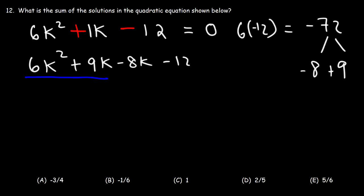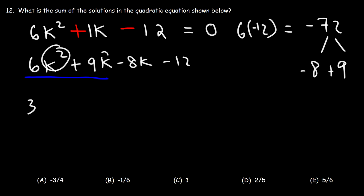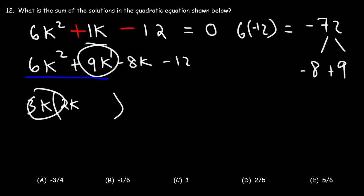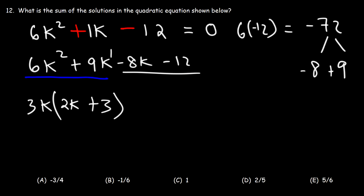Let's begin by taking out the GCF of the first two terms. The greatest common factor of 6 and 9 is 3, and the GCF of k squared and k is k. Inside the parentheses, 6k squared divided by 3k is 2k, and 9k divided by 3k is 3. For the last two terms, the GCF is negative 4. Negative 8k divided by negative 4 is 2k, and negative 12 divided by negative 4 is positive 3.